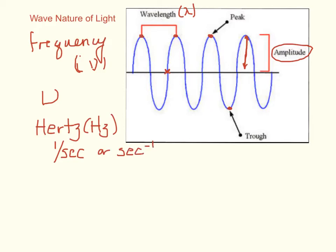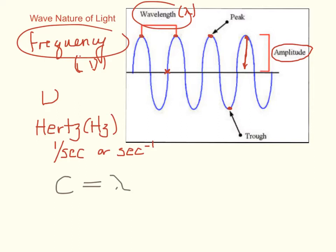The relationship between frequency and wavelength is that if I take the wavelength and multiply by the frequency, it equals a constant, and that constant is the speed of light. C is the speed of light, and it equals 3.00 times 10 to the 8th meters per second.